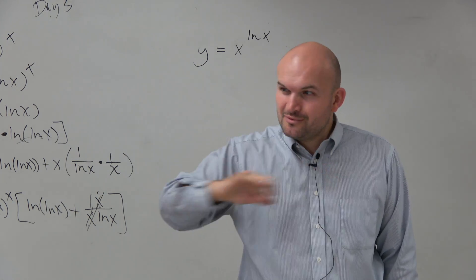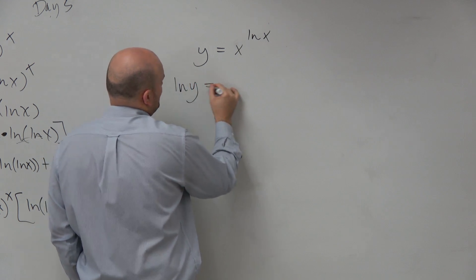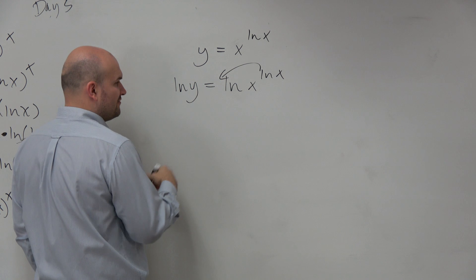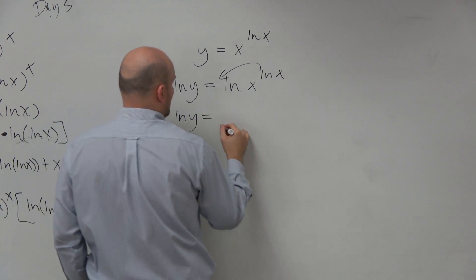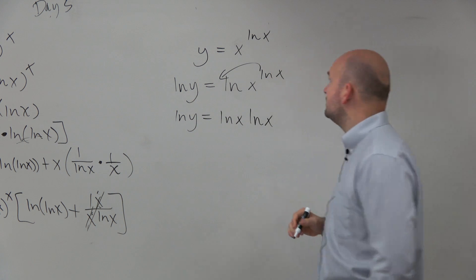Derivatives are easy when we're not dealing with fractions. So if we take the ln of both sides, I can now bring that in front. ln of y equals ln of x times ln of x.